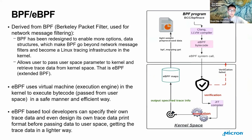So what is BPF and eBPF? eBPF is derived from BPF. BPF stands for Berkeley Packet Filter, originally used for network message filtering. BPF was then redesigned with more options and data structures, going beyond network message filtering. It has now become a Linux tracing infrastructure in the kernel — that is eBPF, extended BPF. With eBPF, we can pass user space parameters to the kernel and retrieve trace data from kernel space. In kernel space there is a virtual machine — the execution engine — which allows us to execute bytecode in a safe manner.